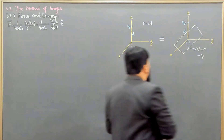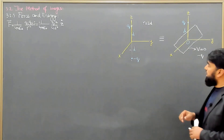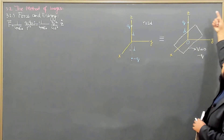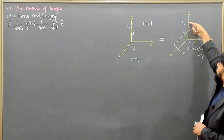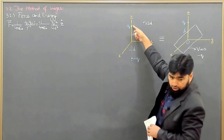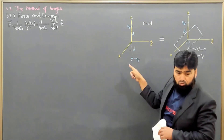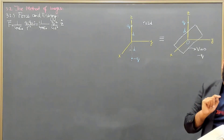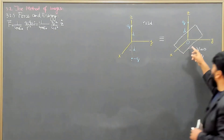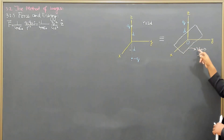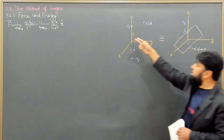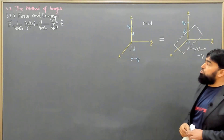The problem is here: when bringing this charge from infinity toward the conducting sheet, I am doing work on only one charge. But when bringing the charge q from infinity into the presence of minus q, I am doing work on both charges. I am not doing any work on the sheet because the sheet is at ground potential. So here single work is done, and there double work is done.